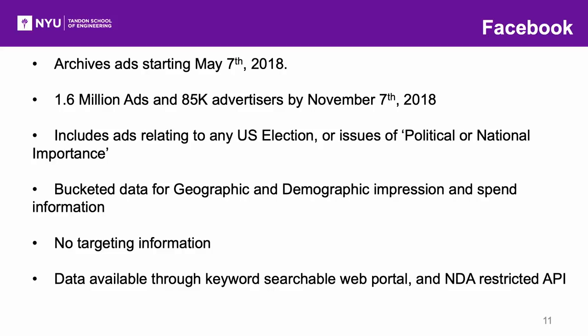Facebook was actually fairly broad as to what they included within their political archive. They included any ads related to U.S. elections—federal, state, or local. They also included issue ads. As we saw with Russian interference, a lot of times the ads didn't mention actual political candidates—they just mentioned polarizing issues. Facebook also included ads of political and national importance, with about 13 different criteria. Along with the text and images or videos of the ad, they also included ranges of geographic impressions and demographic impressions by gender and age.